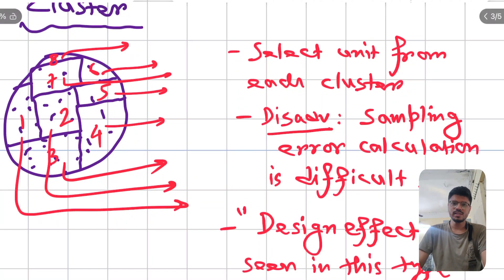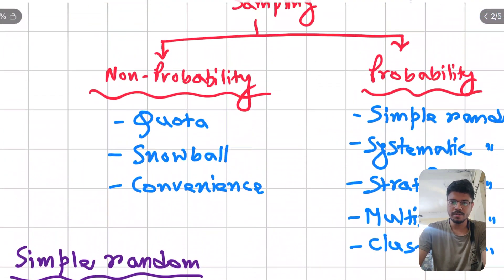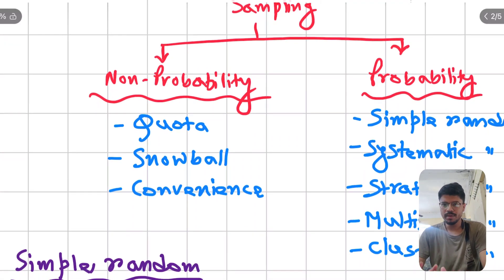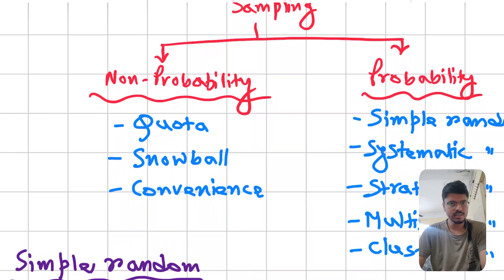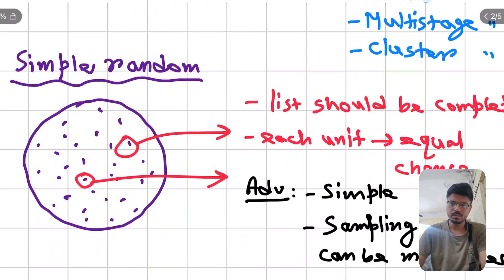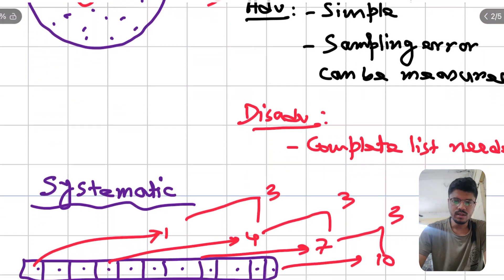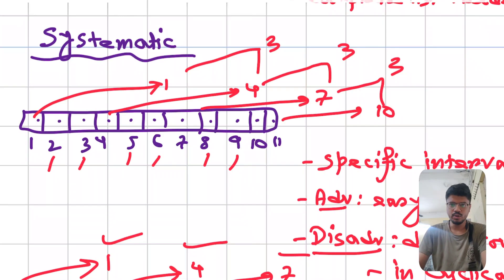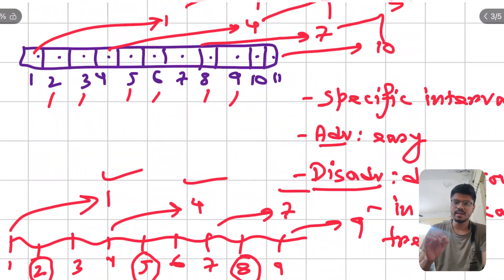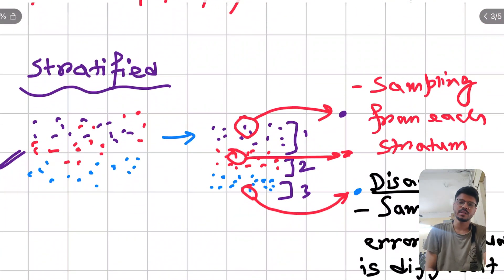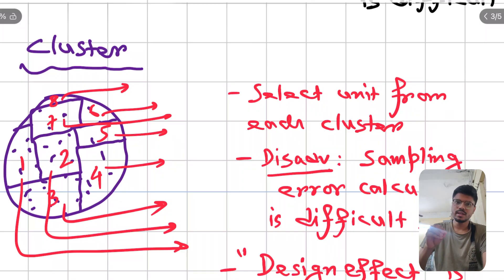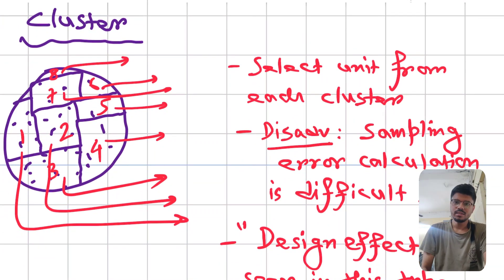To quickly revise: sampling is of two types — non-probability sampling (quota, snowball, convenience) and probability sampling (simple random, systematic, stratified, multi-stage, cluster). Simple random means each unit can be randomly selected; disadvantage is you need a complete list. Systematic sampling uses a specific interval; disadvantage is it's dangerous in cyclical trends. Stratified sampling arranges units into strata before sampling. Cluster sampling selects units from each cluster. This is very important for your exam — please revise it.